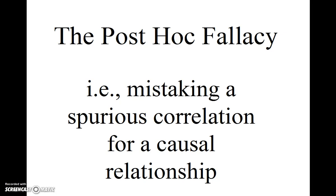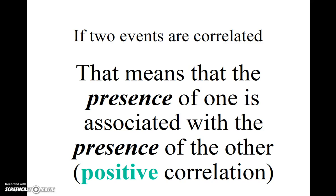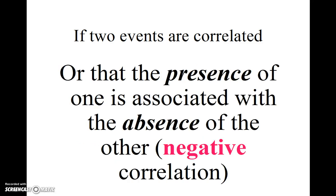Welcome to the Headless Professor video on the post-hoc fallacy — in other words, the mistake of viewing a spurious correlation as proof that one variable caused the other. If two events are correlated, that means that the presence of one event is associated with the presence of the other event. That's what a positive correlation means. Or, that the presence of one event is associated with the absence of the other event. That's what a negative correlation means.